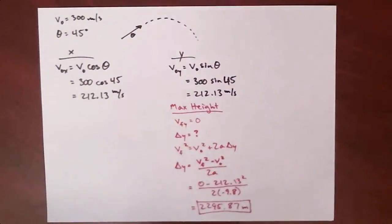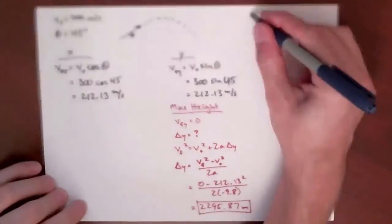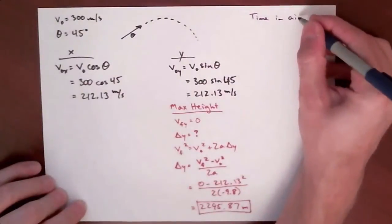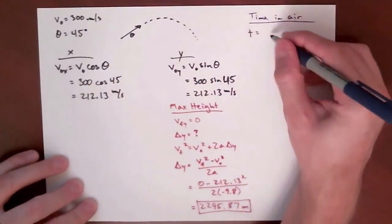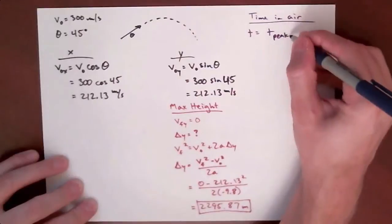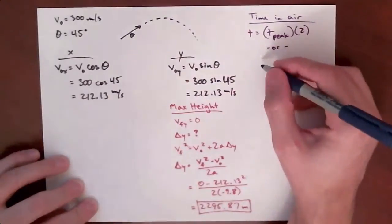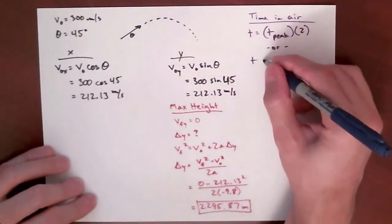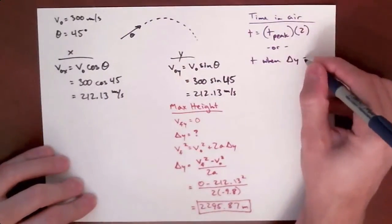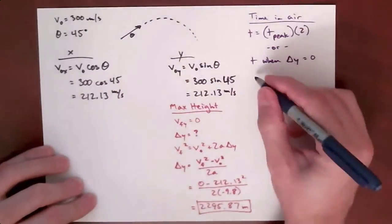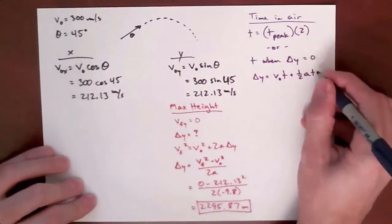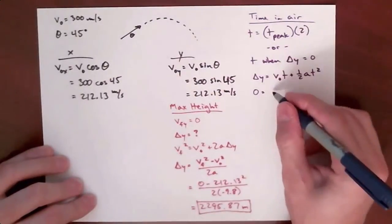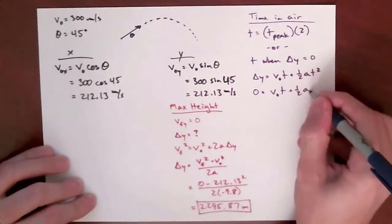Once we find the maximum height, the next thing we're supposed to find is how long it is in the air. There are two approaches here. We can either find the time it takes to get to the peak, the height we just found, or we could say we're finding the time when delta y is zero, because it starts and ends at the same height. We're going to do that approach.